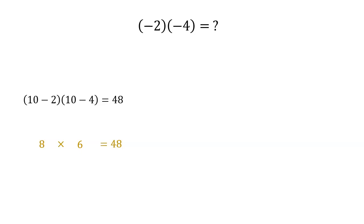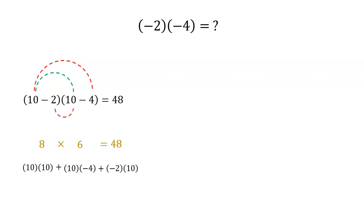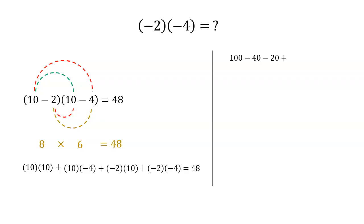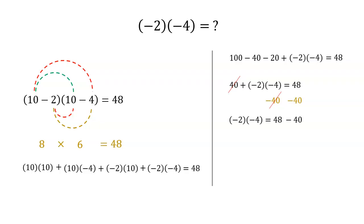Now, using algebraic expansion, we have: 10 times 10, plus 10 times negative 4, plus negative 2 times 10, plus negative 2 times negative 4, equals 48. Simplifying, we have 100 minus 40 minus 20 plus negative 2 times negative 4, equals 48. Since we do not know this value, let's keep it unevaluated. Simplifying further, we have 40 plus negative 2 times negative 4 equals 48. Subtracting 40 from both sides, negative 2 times negative 4 equals 48 minus 40. Finally, negative 2 times negative 4 equals positive 8.